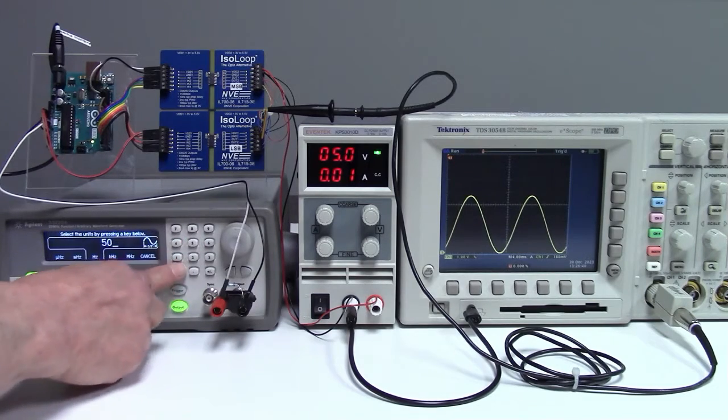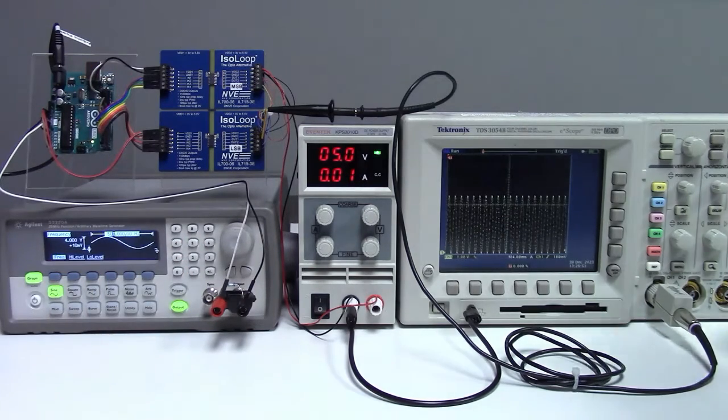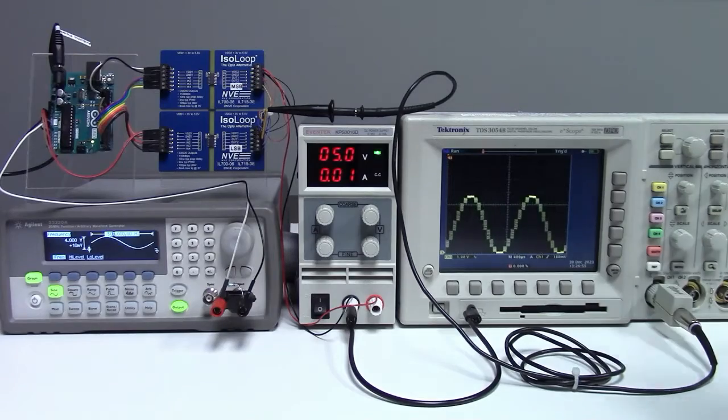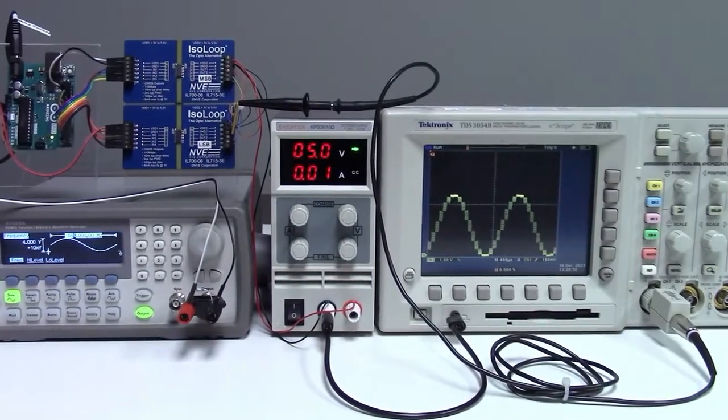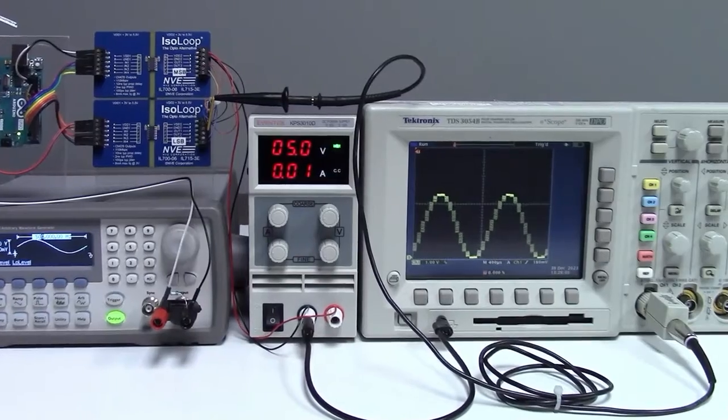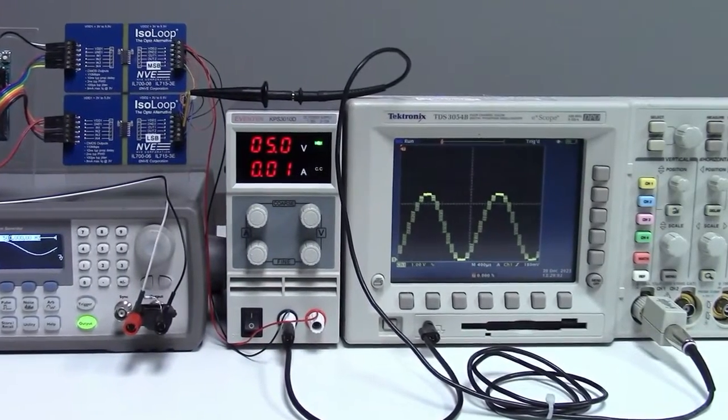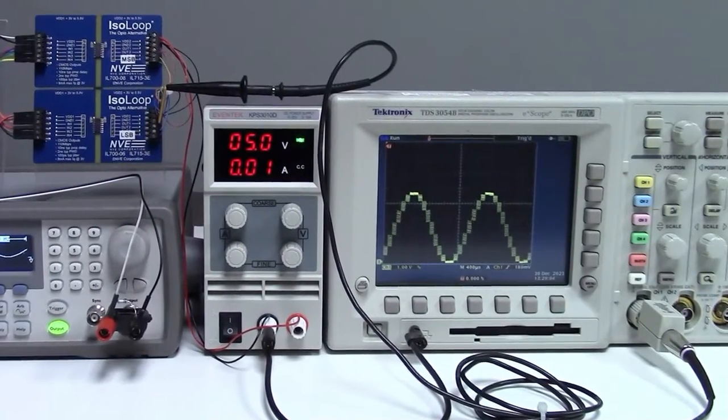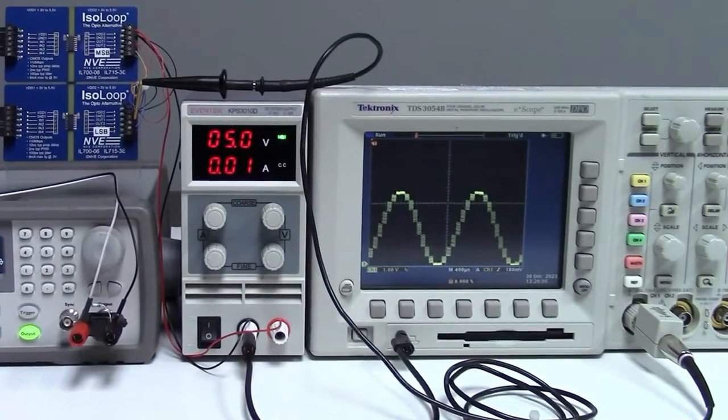But at 500 Hz, we run into sampling speed limitations. The Arduino is limited to about 10,000 samples per second, but the isolators can run to 110 megabits per second. So we could go much faster with a faster micro.